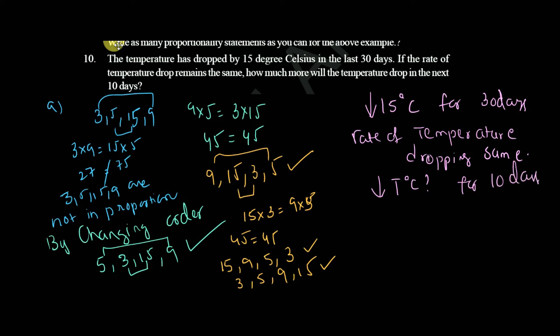Next 10 days. Then what you can do here is, let's take 15 degrees Celsius is to 30 days will be equal to some temperature degrees Celsius to the 10 days. Then product of means and product of extremes.